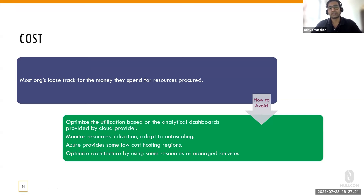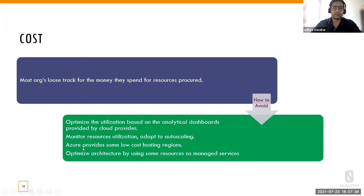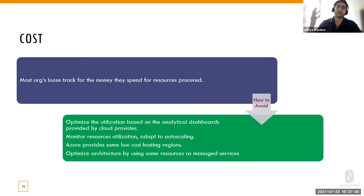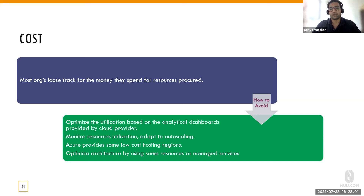Specifically in Azure, there are certain low-cost hosting regions where resources are somewhat cheaper — useful for POCs. Also, if you're using test data, it shouldn't have an issue. You need to optimize the architecture by using managed services — you can use the same resource for your development, test, and UAT environments. Resources like Azure Key Vault can be shared within three different environments, and that can save some money.